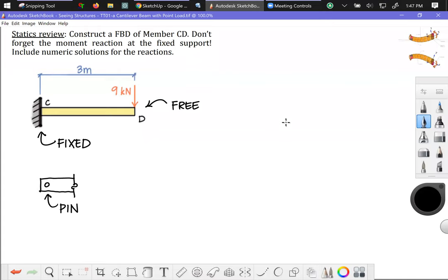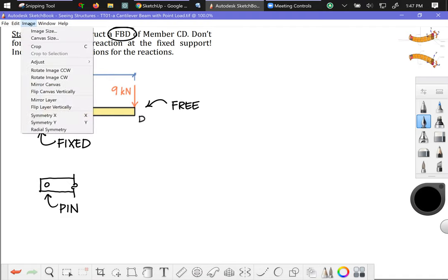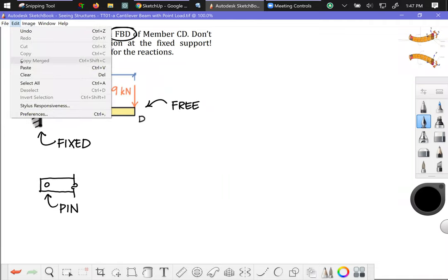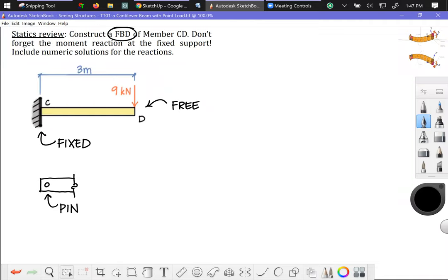All right, let's go ahead and get into the solution there. So now that we know a little bit about how this system is working, we want to do a free body and then solve for reactions. So the problem asks us to construct a free body diagram. And to do that, I'm going to do a little selection box.